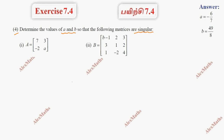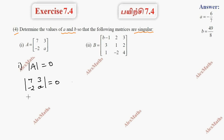Matrices are singular when the determinant equals 0. So determinant of A is 0. Determinant: 7, 3, minus 2, a — this equals 0. Equating: 7a plus 6 is 0.